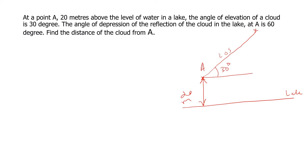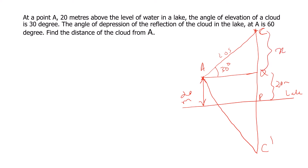The angle of depression of the reflection of the cloud in the lake at A is 60 degrees. We label the cloud as C and its reflection as C dash. Joining these, we get two right triangles with intersection points P and Q. We need to find the distance of the cloud from A. We take the height of the cloud above the level of A as x meters.